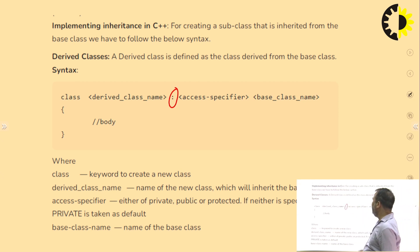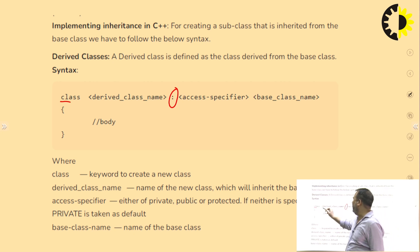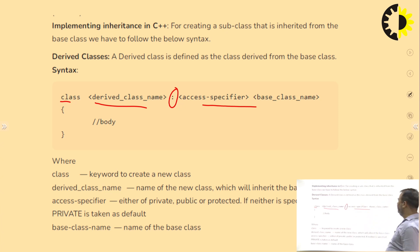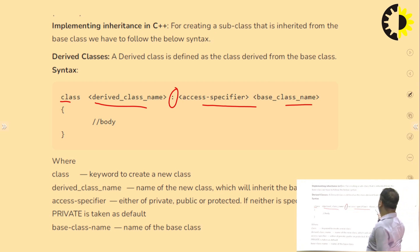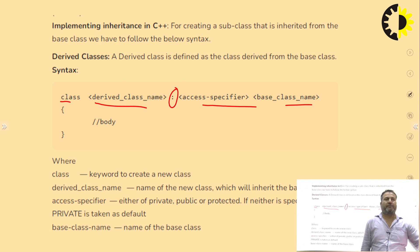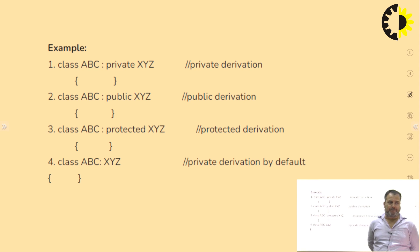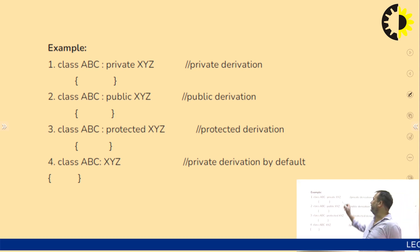In C++, to implement inheritance and create a child class, we write the class keyword followed by the child class name, then a colon, the access specifier (public, private, or protected), and the base class name. This syntax indicates that this class is going to inherit the property of that base class. For example, class ABC colon private XYZ means ABC is going to inherit XYZ — XYZ becomes the parent and ABC becomes its child class.